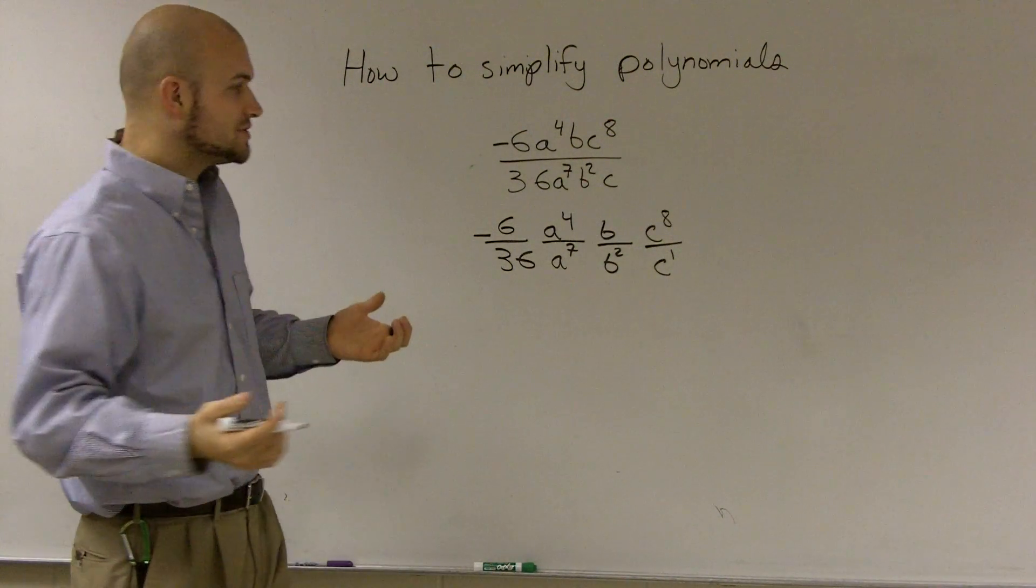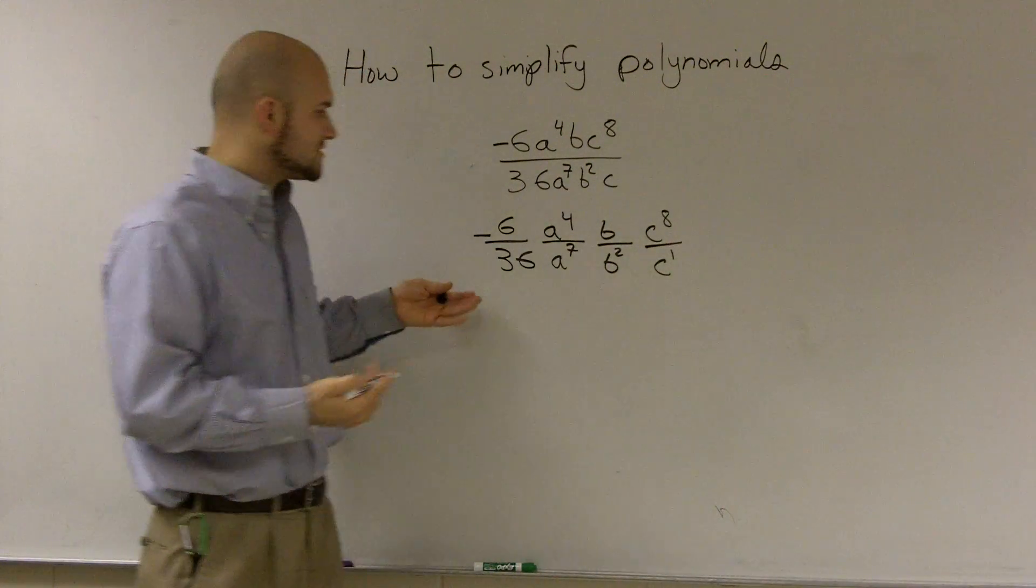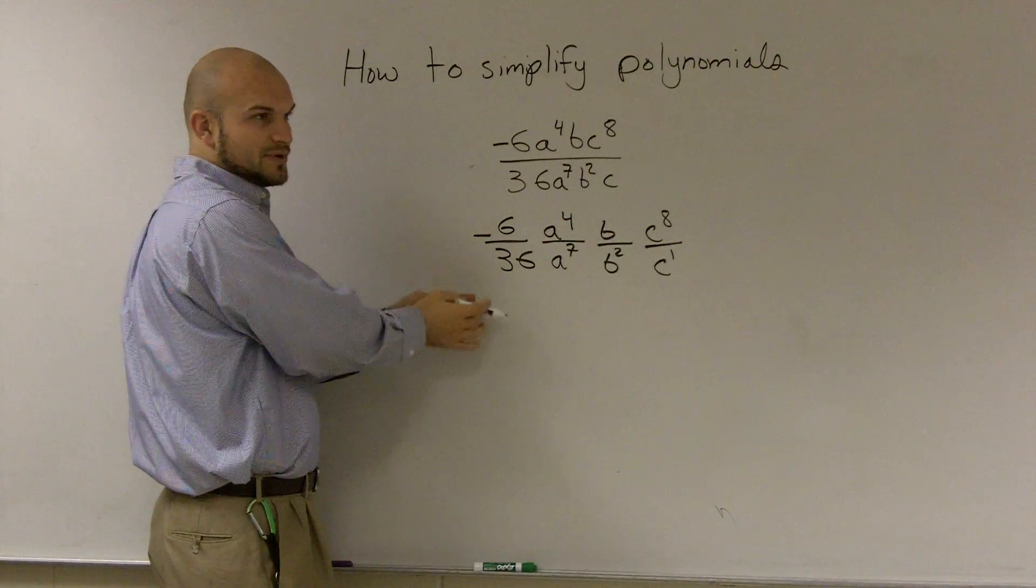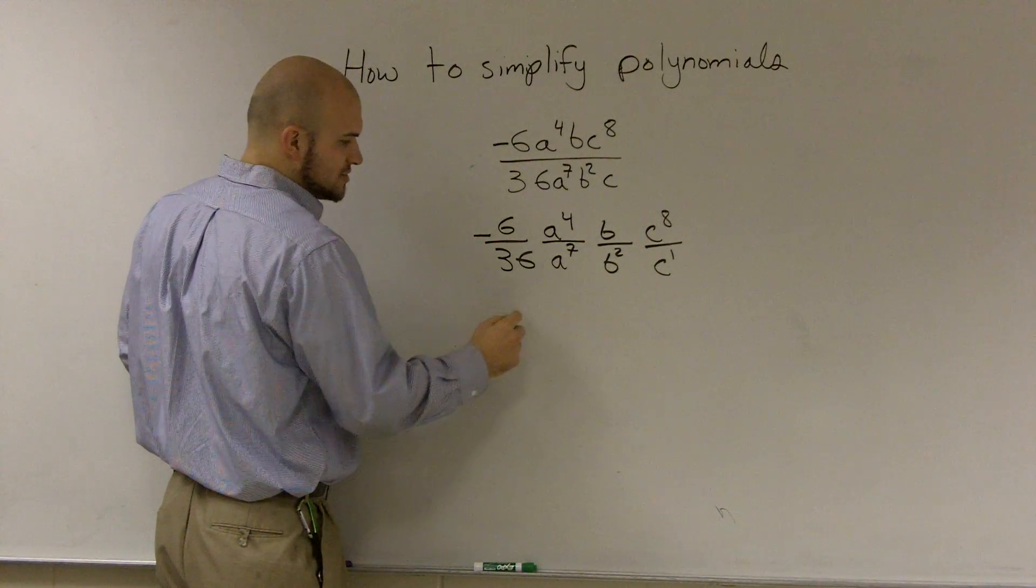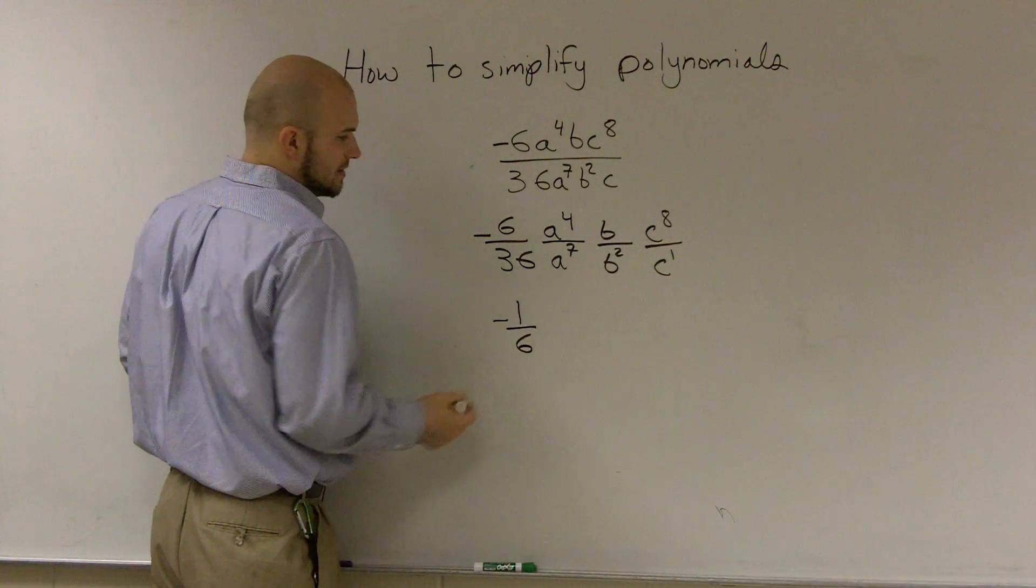So what I want to do is see if I can reduce these using my laws of exponents. Well, this I can just reduce down to a regular fraction. I can divide the top and bottom by 6. So that becomes 1/6, and it's still negative.